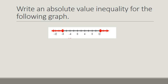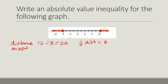Now I want to write an absolute value inequality for a given graph. The first thing you do is find the distance between your two points. Using the ruler postulate from geometry, the distance is 12 minus negative 8, which is 20. Then I want to find the midpoint — the point exactly in between. Half the distance is 10, so I can count 10 above or 10 below to find the midpoint: 12 minus 10 is 2, and negative 8 plus 10 is also 2. So our midpoint is 2.